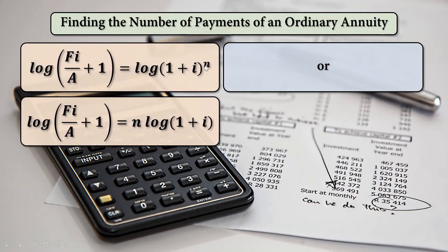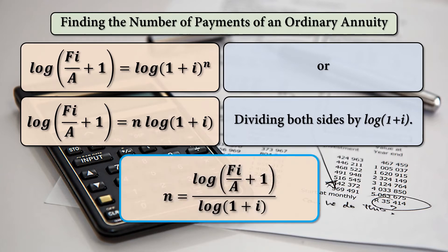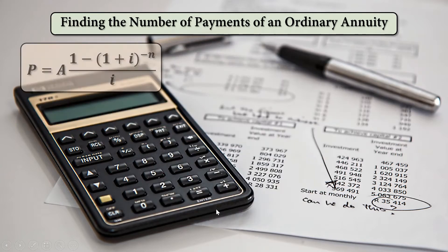Bringing down N, the result is N times the log of 1 plus I. Then dividing both sides by log of 1 plus I in order to find the value of N, that is N equals log of the quantity FI over A plus 1, all over log of 1 plus I.